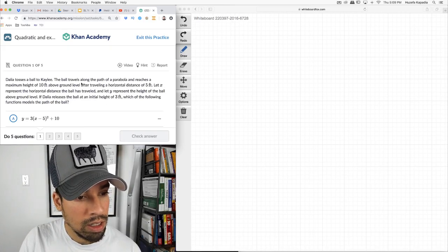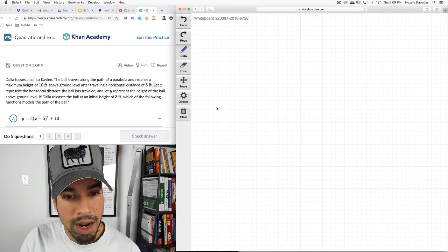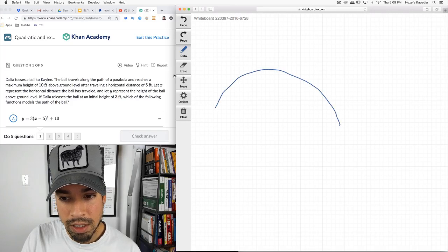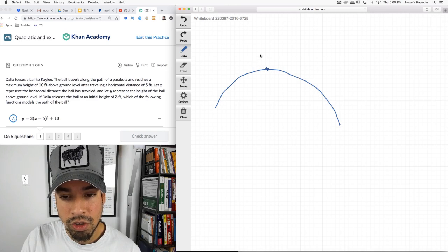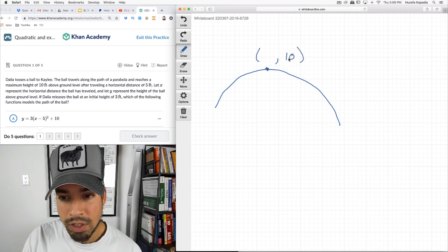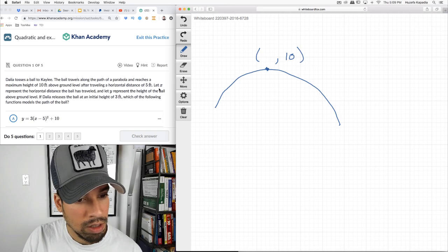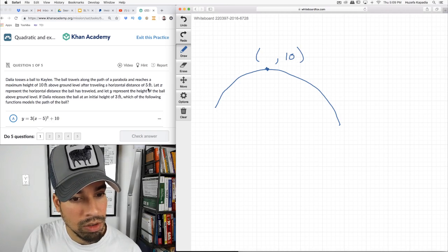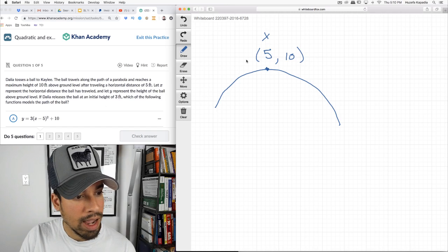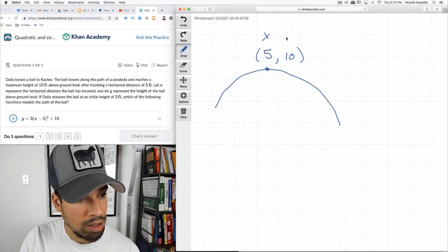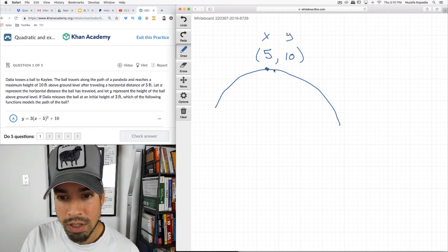Dahlia tosses a ball to Kaylee. The ball travels along the path of a parabola and reaches a maximum height of 10 feet after traveling a horizontal distance of 5 feet. So they're saying that the horizontal distance is represented by X.